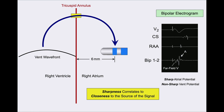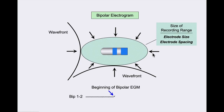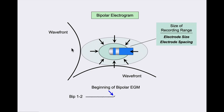To summarize, the sharpness of the signal correlates to how close the source is to the electrode. The size of the recording range depends on both the size of the electrodes and, to an even greater extent, the inter-electrode spacing. If we decrease the size of the electrodes and bring them closer together, the recording area gets much smaller. As the wavefront crosses in a shorter distance, the electrogram gets narrower, sharper, and actually a little bit larger.